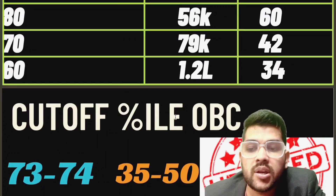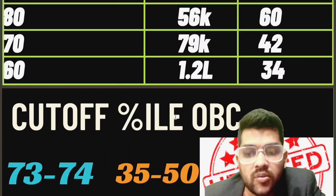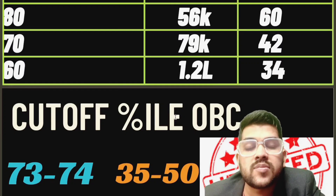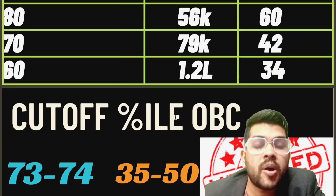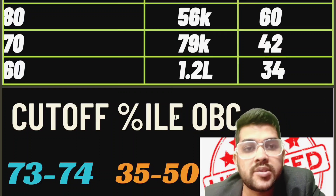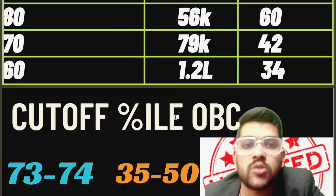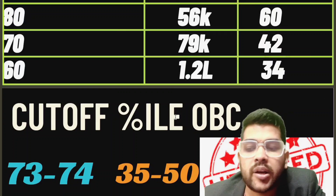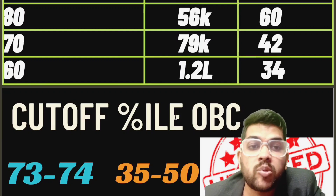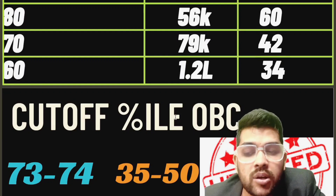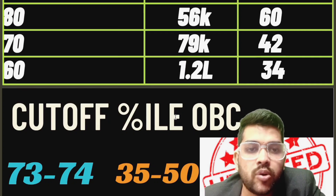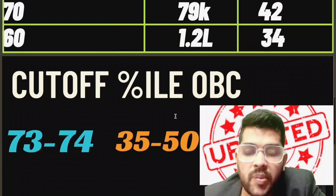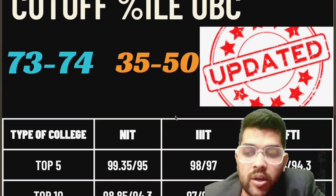The cutoff percentile to qualify for JEE Advanced will be 73 to 74 for OBC category this year. This remains the same for both first and second attempts, but the marks required will change based on difficulty level. For the first attempt, expected marks range from 35 to 50 — approximately 35 for a hard paper, 50 for an easy paper, and 40 to 45 for a moderate paper.